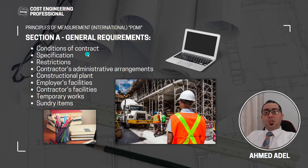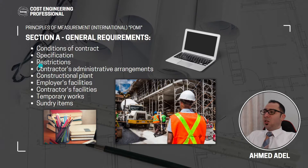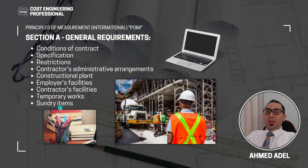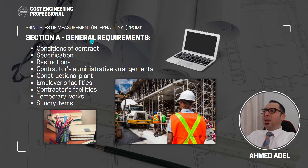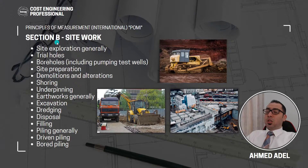The next section is Section A — General Requirements. In this section we find items related to the conditions of contract, if those conditions are impacting the cost of the project. Other items here include specifications, restrictions, contractor administrative arrangements, construction plant, employer facilities, contractor facilities, temporary works, and sundry items.